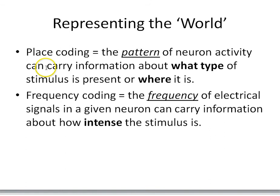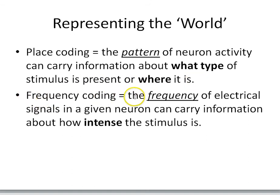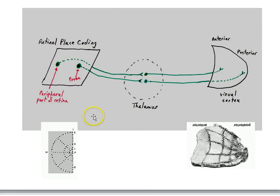Now, how do neurons represent the world? Well, there are two strategies. One's called place coding, where the pattern of neuron activity can carry information about what type of stimulus is present, or where it is. And the second kind is called frequency coding — the frequency of action potentials in a given neuron can carry information about how intense the stimulus is.